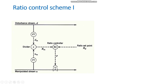In scheme one, a ratio set point is given to the system. The disturbance stream — also called the wild stream — and the manipulated stream are the two flows. Flow transmitters are placed on the flow lines, and a control valve is placed on the controllable flow line. The ratio is maintained by manipulating this flow using the control valve.